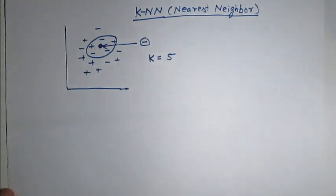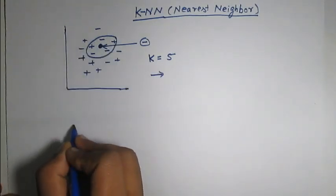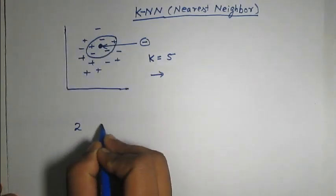So, this nearest neighbor algorithm works like this. This is a very simple algorithm. We just have to calculate the nearest neighbors. Let us take an example. Suppose these are the data points.